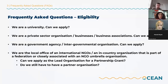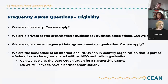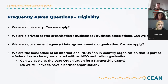If you're the local office of an international NGO, or an in-country organisation that is part of a federation or closely associated with an NGO umbrella organisation, you can apply. It can be the lead organisation or the partner organisation — it depends also on your income levels. In any case, we strongly recommend, in the ethos of OCEAN, that you also have at least one local partner which is outside your umbrella organisation.